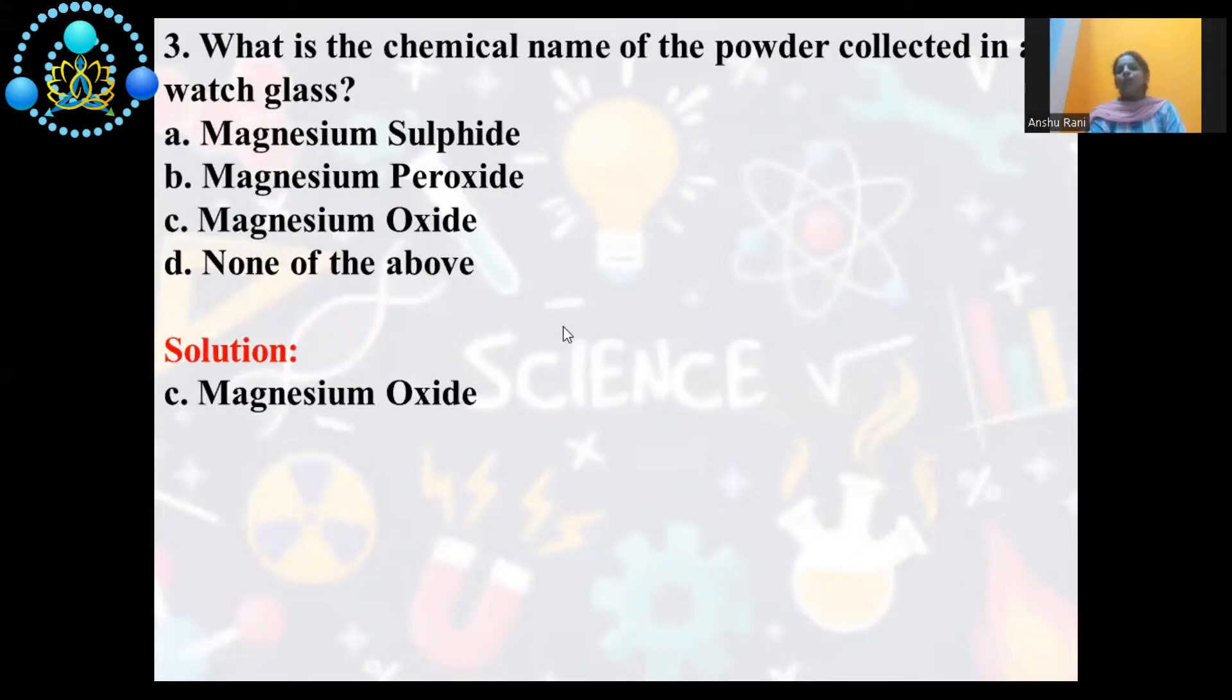What is chemical name of powder which is collected in the watch glass? It is magnesium oxide, as discussed earlier.